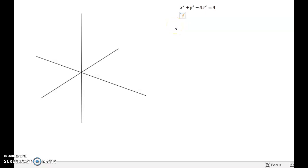So here's the quadric surface whose equation is x squared plus y squared minus 4z squared equals 4. And again, I'm going to use traces.